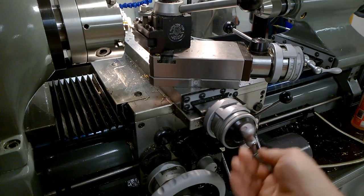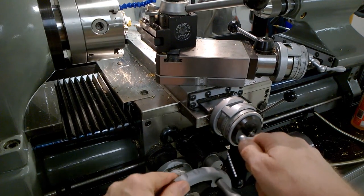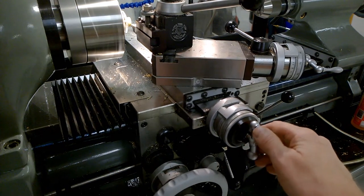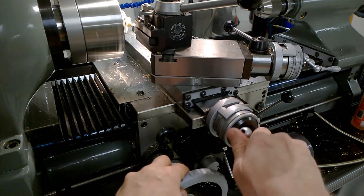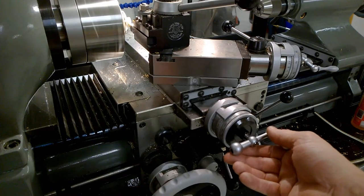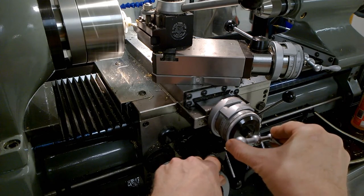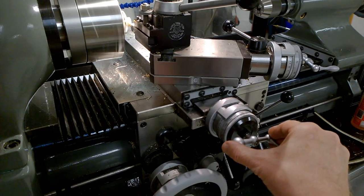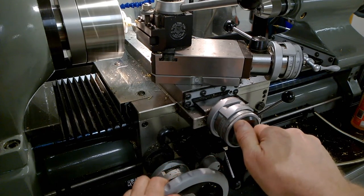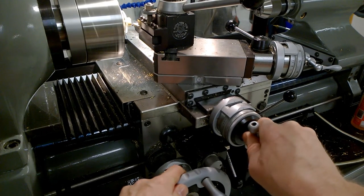This is called a turning cut. My right hand is moving the cross slide about 30 thousandths of an inch for each cut.